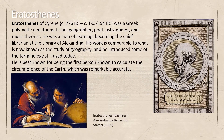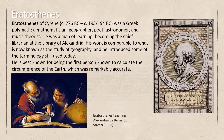Eratosthenes of Cyrene was a Greek polymath — a mathematician, geographer, poet, astronomer, and music theorist. His work is comparable to what is now known as geography. He is best known as the first person to calculate the circumference of the Earth, which was very accurate.